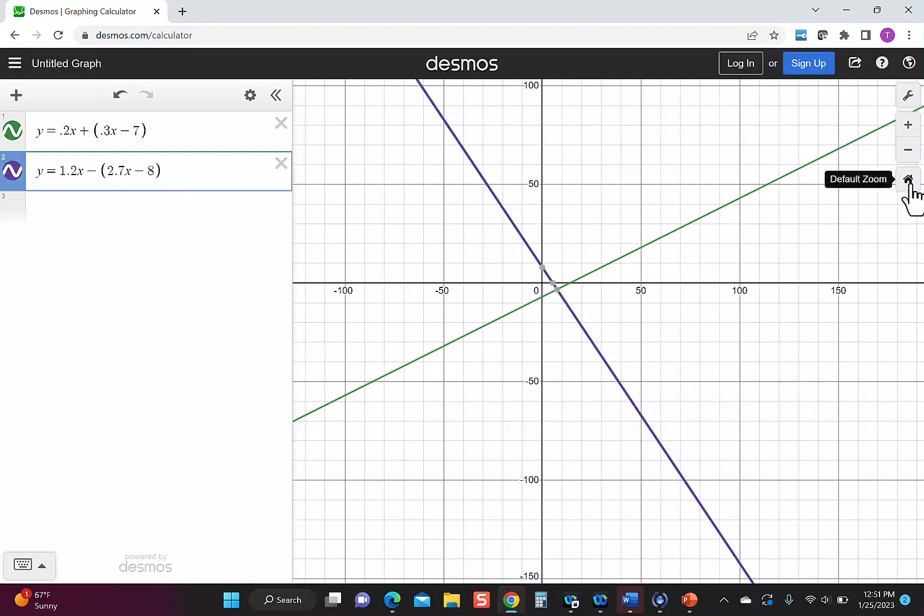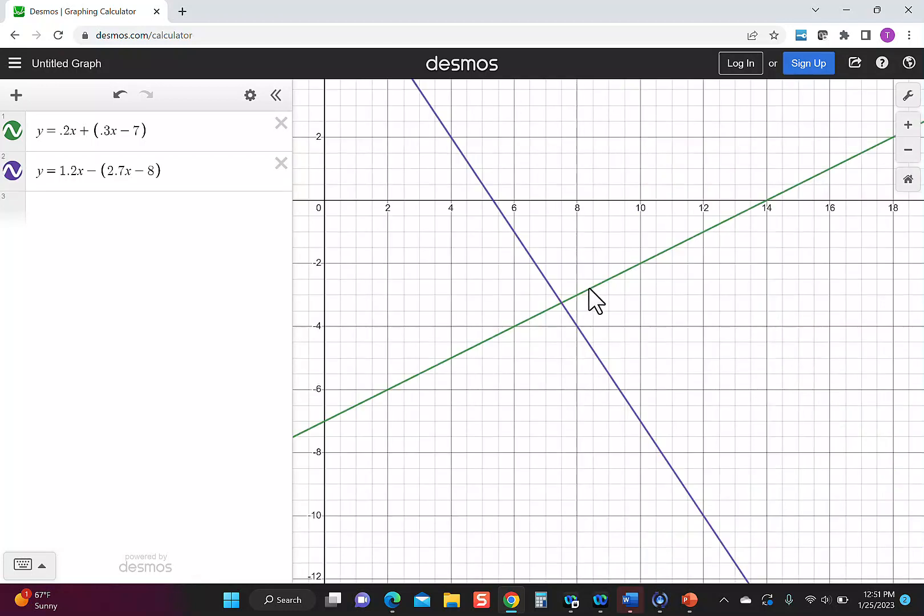If you're in the standard view, you might not see it. Then remember, tap either one of the lines and it will show you the point which is the answer. So this time it says our answer is 7.5.